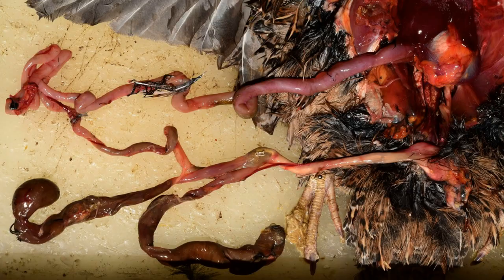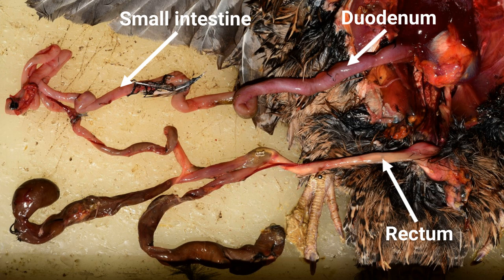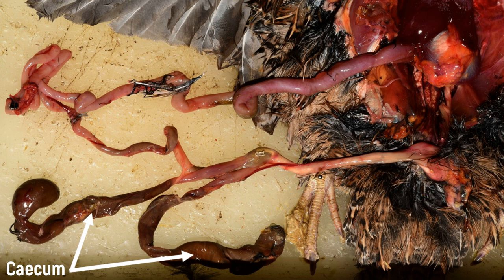When the individual organs are exposed, the individual parts of the digestive system, especially the intestine, can be easily recognized. At the transition from the small intestine to the rectum, there are two ceca. These can be very long in ducks and their allies, the anseriforms, and chickens and theirs, the galliforms.